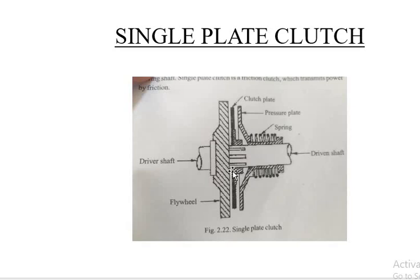The clutch can also be a multi-plate clutch. It uses friction material — ceramic material is used when higher friction is needed. The centrifugal clutch is used in bikes at very high power transmission. There is also the electromagnetic clutch used in different applications.